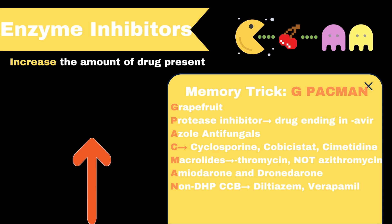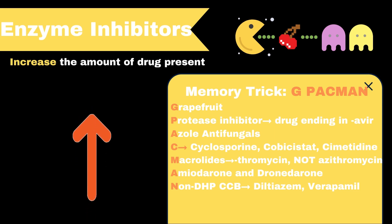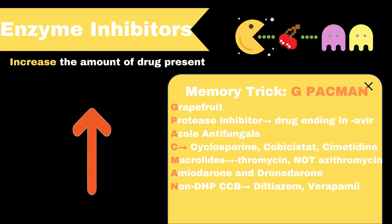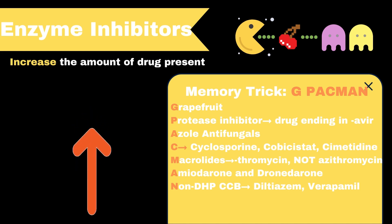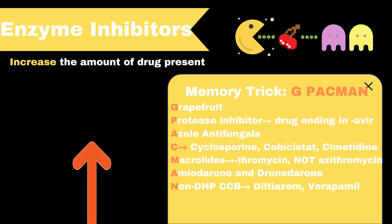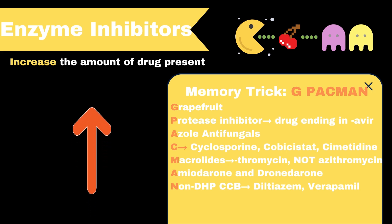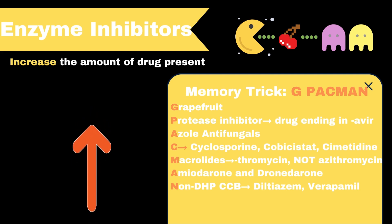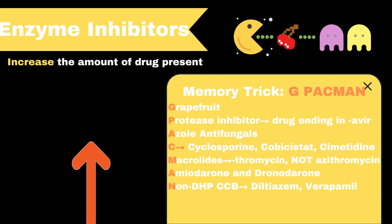A good memory trick for these is G-PAC-MAN. This stands for G for grapefruit, P for protease inhibitors, A for the azole antifungals, C for cyclosporine, cobicistat, and cimetidine, M for the macrolide antibiotics, A for amiodarone, and N for non-DHP calcium channel blockers like diltiazem and verapamil.